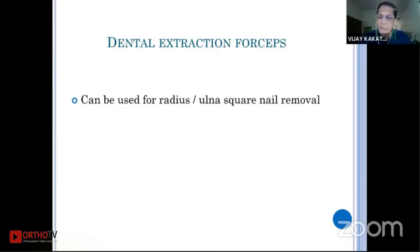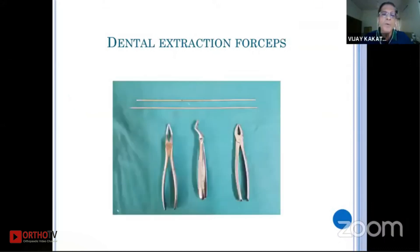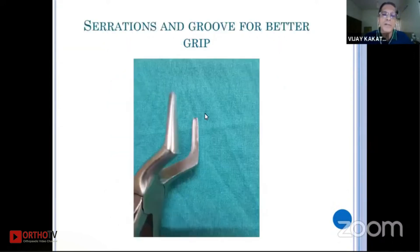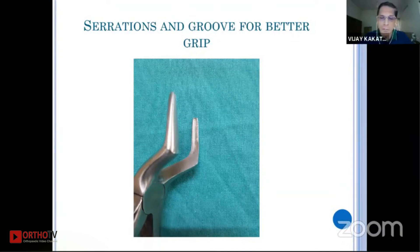This is another instrument. All of us have some dental surgeon friends. For radius nails, as Tanna sir has said, sometimes when you hammer the nail it gets flush to the bone surface, and then holding that nail to take it out becomes very difficult because no instrument can easily go there. These are instruments used by dental surgeons for dental extraction. You can see they are very pointed, thin, and have serrations. You can easily slide this instrument underneath the nail — it has an excellent grip.